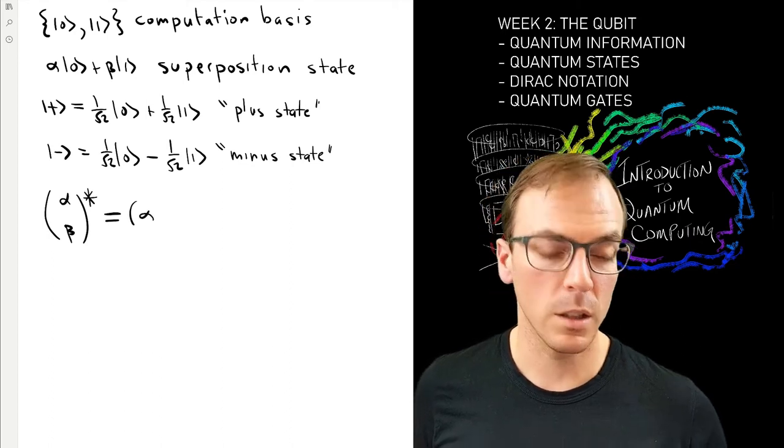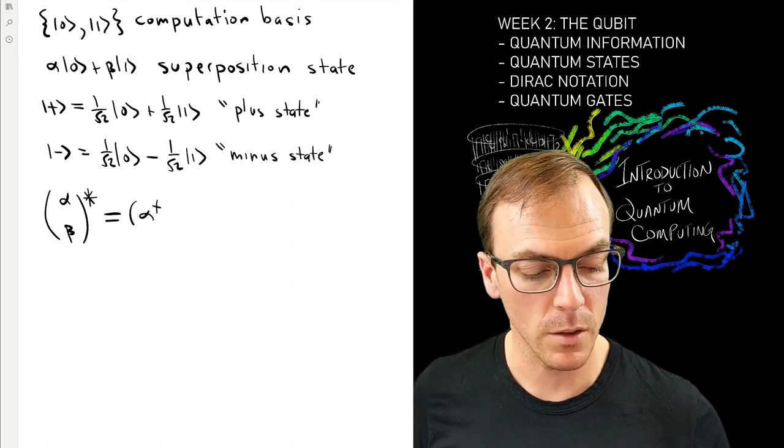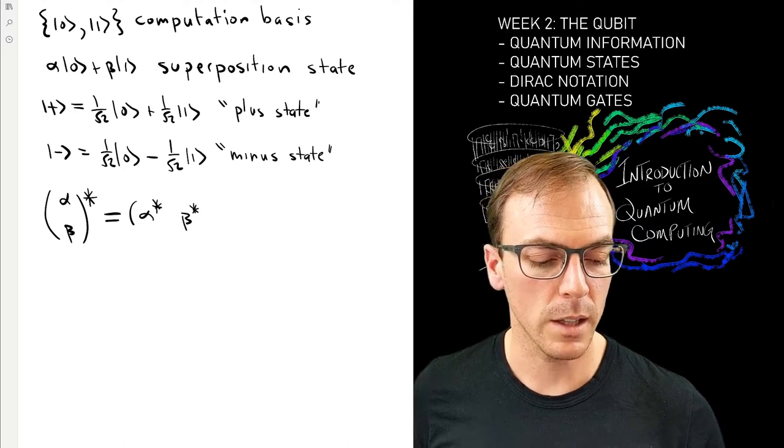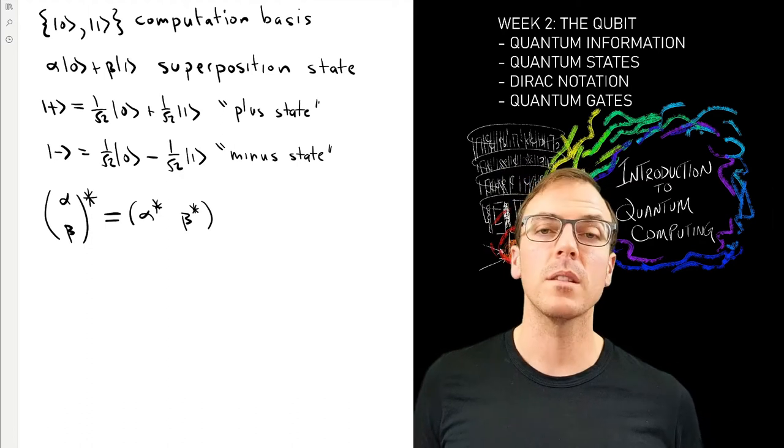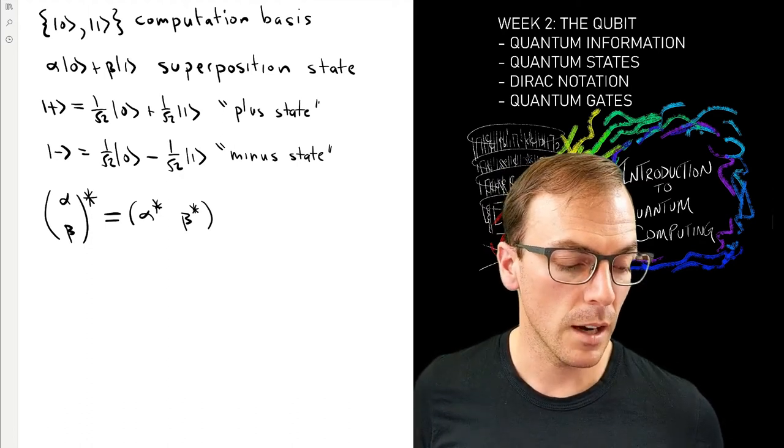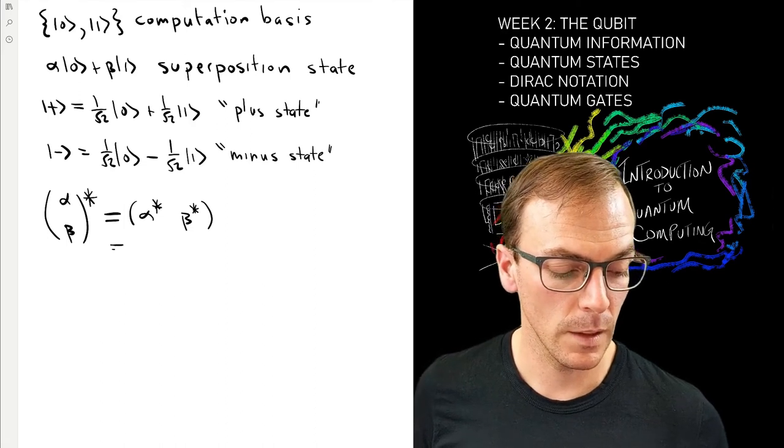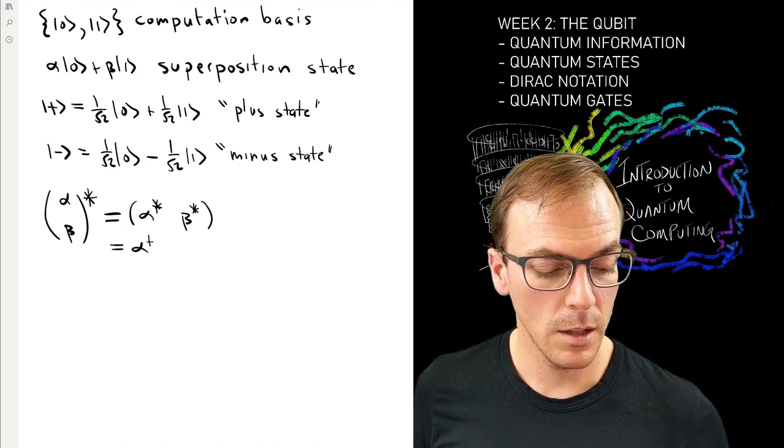So I'm going to turn rows into columns and columns into rows, vice versa. And every time I do that, I take the complex conjugate of each of the elements of that column vector or row vector.